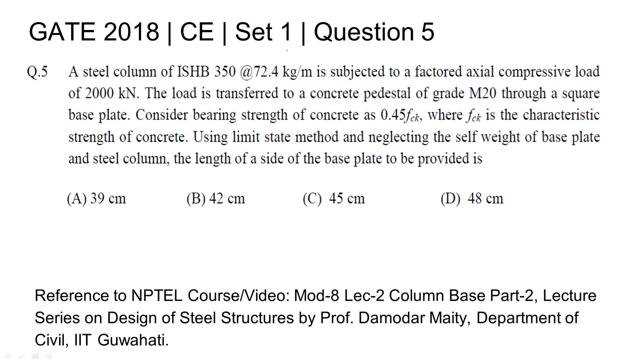Gate 2018 Civil Engineering Set 1 Question No. 5. A steel column of ISHP 350 at the rate of 72.4 kg per meter is subjected to a factored axial compressive load of 2000 kN.